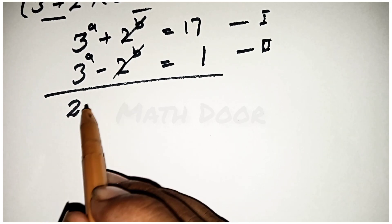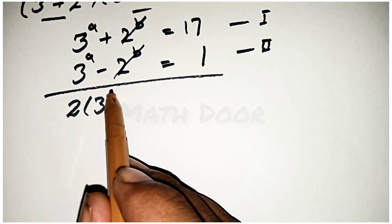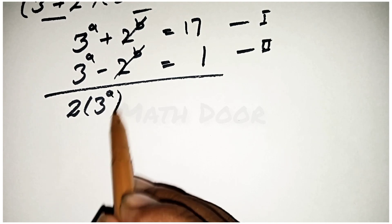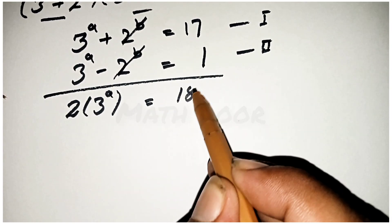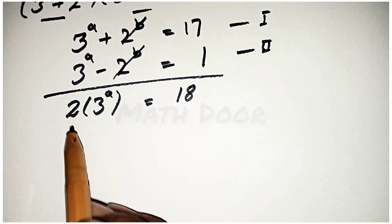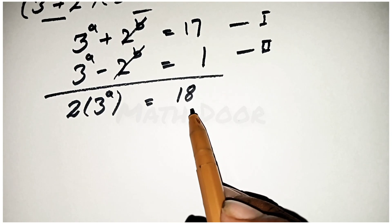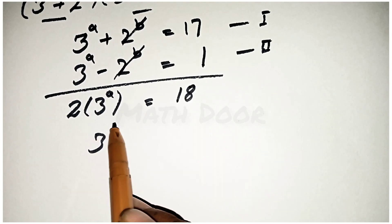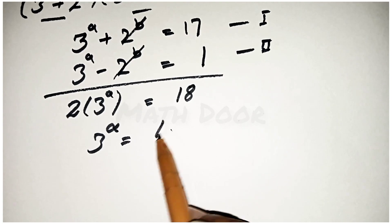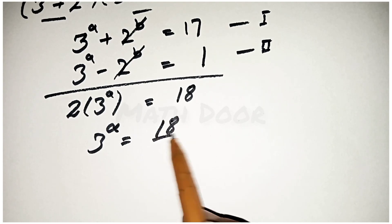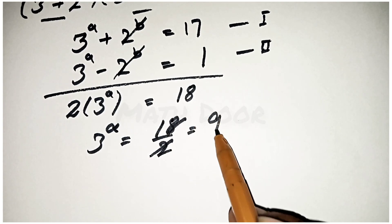So 2 times 3 power a is equal to 18. Taking the 2 to the right side of the equation, 3 power a is equal to 18 over 2, which is also equal to 9.